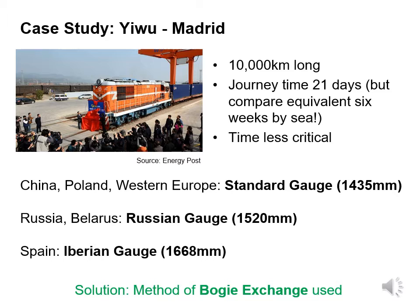Let's now look at some case studies. The journey from Yiwu to Madrid is 10,000 kilometres. The journey time is 21 days, but the alternative is six weeks by sea. From China through Poland and Western Europe, we have standard gauge of 1,435 millimetres. In Russia and Belarus, we have the Russian gauge of 1,520 millimetres. And in Spain, we have the Iberian gauge of 1,668 millimetres. The solution was a bogie exchange method.